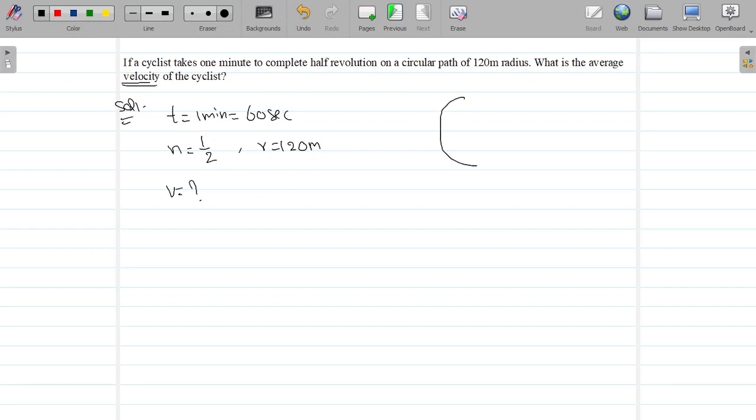Let us consider object is moving in a circular path of radius 120 meters and it is going to make half revolution. Let us consider this is position A. It started here and it has gone to half path. Half path means this is the displacement. That means here is R, here is R. Total displacement is nothing but 2R diameter.